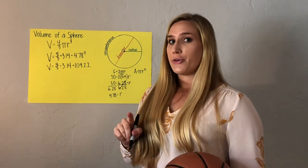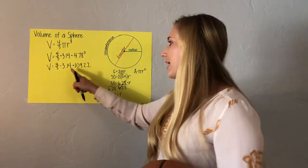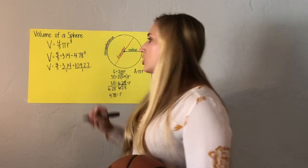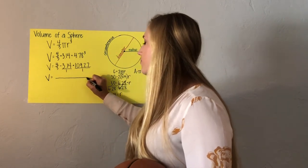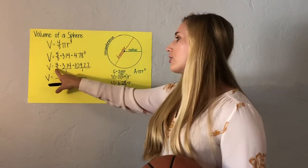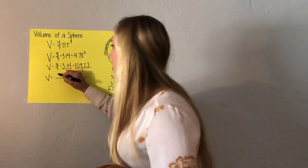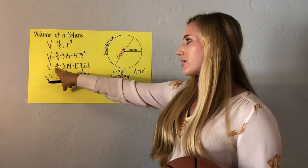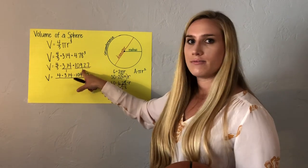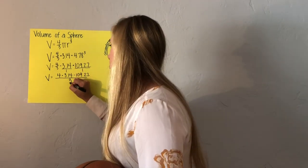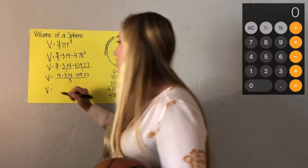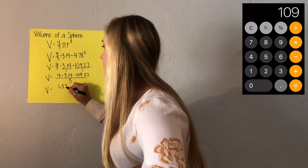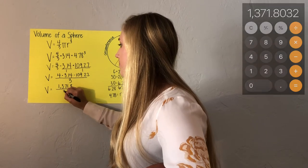Here's a little trick — this fraction always used to throw me off, but I remembered that whole numbers are also fractions with an invisible 1 in the denominator. If I rewrite the equation with a fraction bar, I put all the numbers in the numerator multiplied together, and all the numbers in the denominator multiplied together. In the numerator I have 4 times 3.14 times 109.22; in the denominator I have 3 times 1 times 1. Anything times 1 is itself, so the only thing in my denominator is 3. Multiplying the numerator gives me approximately 1,371.8.